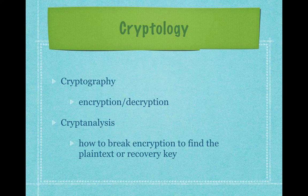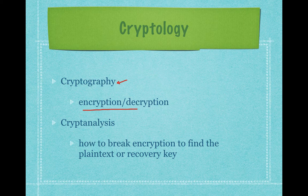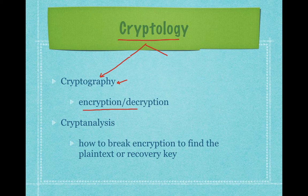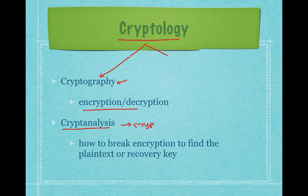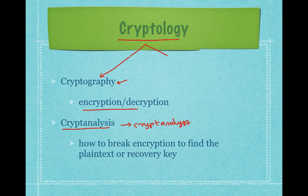Let's take the first thing: confidentiality. Confidentiality can be obtained using encryption of the message. The area which deals with encryption and decryption of the message is called cryptography. Actually, cryptography is a subset of a broad area called cryptology. Cryptology has two children: the first is called cryptography, and the second is called cryptanalysis. Cryptanalysis is how to break the encryption in order to find the plain text or recover the key. The people who do this are called cryptanalysts. For now, we will focus on the basics of cryptography.